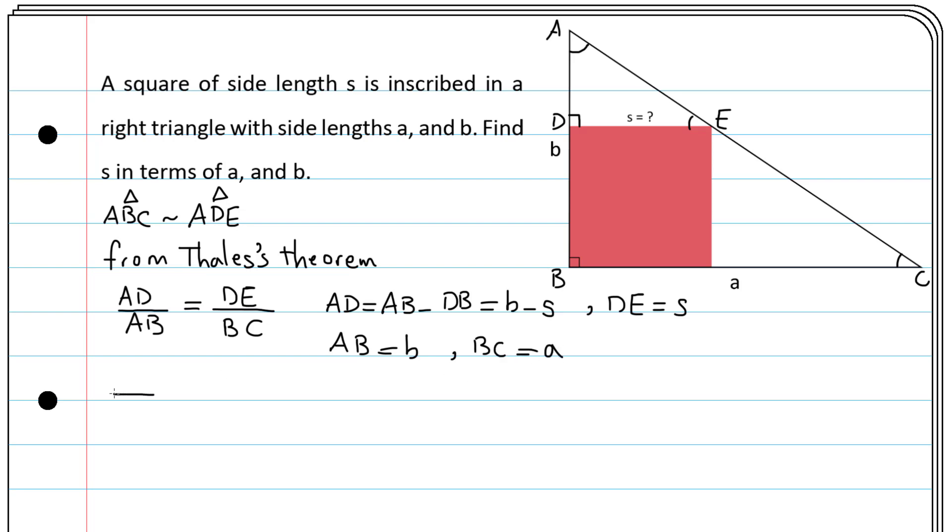Therefore we have AD, which is b minus s, to AB, which is b, equals DE, which is s, to BC, which is a. So we have ab minus as equals bs.